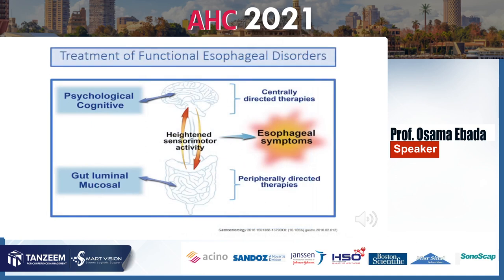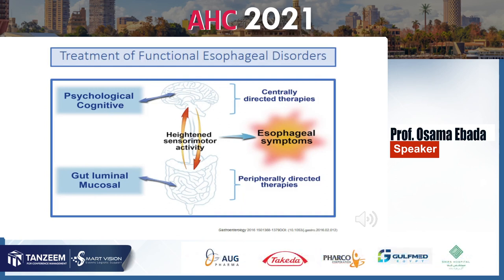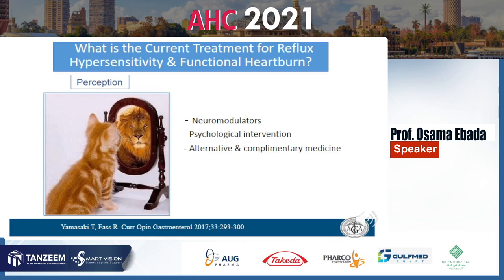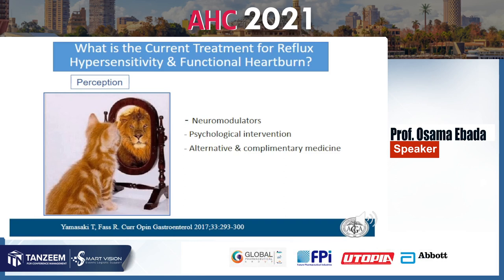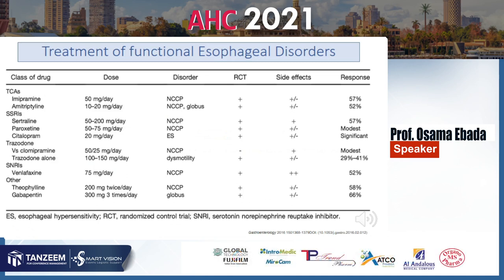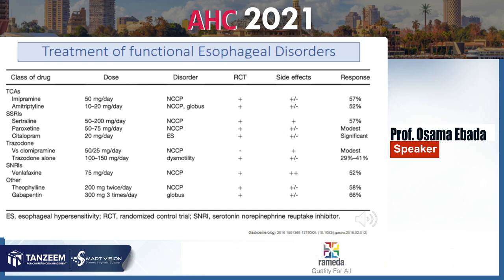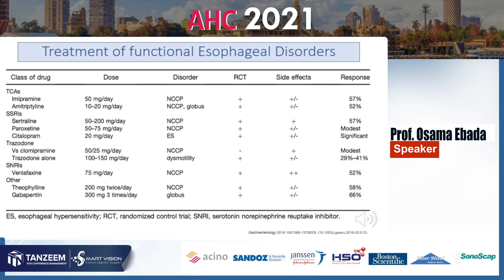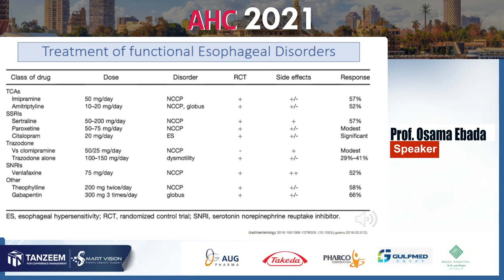Treatment of functional esophageal disorders depends on centrally directed and peripherally directed therapies, involving changes in perception through neuromodulators, psychological interventions, and complementary medicine. Tricyclic antidepressants show about 50-60% response, especially for non-cardiac chest pain and globus. SSRIs, particularly sertraline and trazodone, show similar response. SNRIs also achieve about 50%. Theophylline may be used in non-cardiac chest pain, and gabapentin in globus with about 60% success.